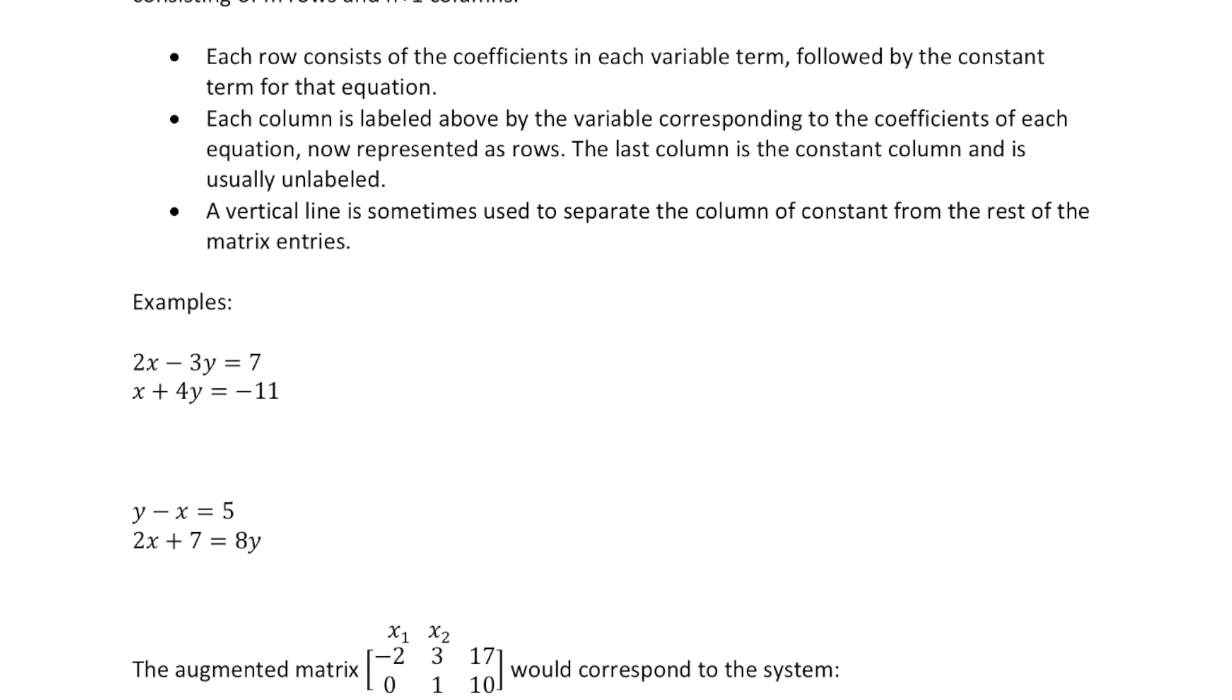Let's take some quick examples here. Let's take this system of equations: 2x minus 3y equals 7, x plus 4y equals negative 11. Notice that this system is in proper form.